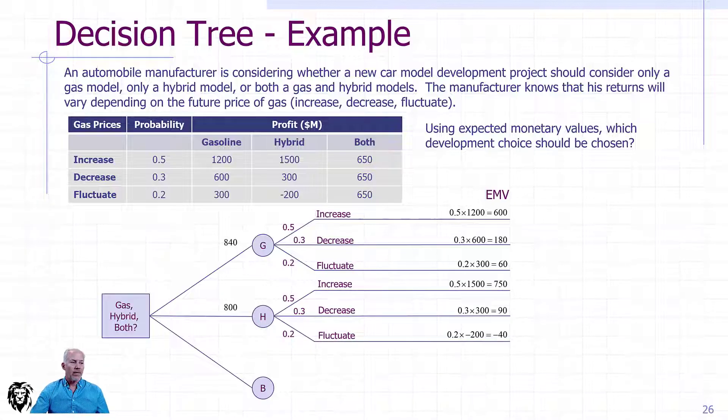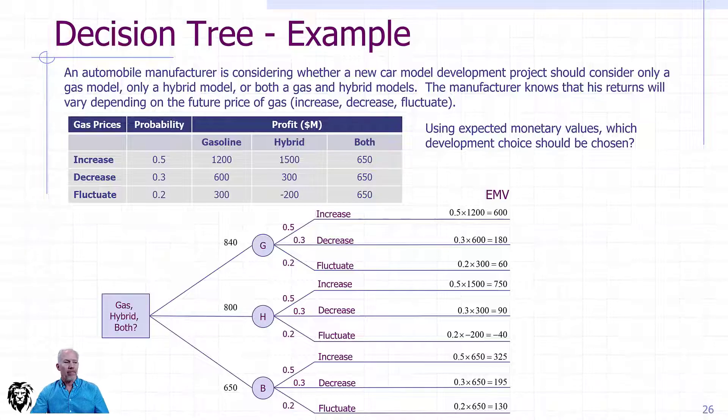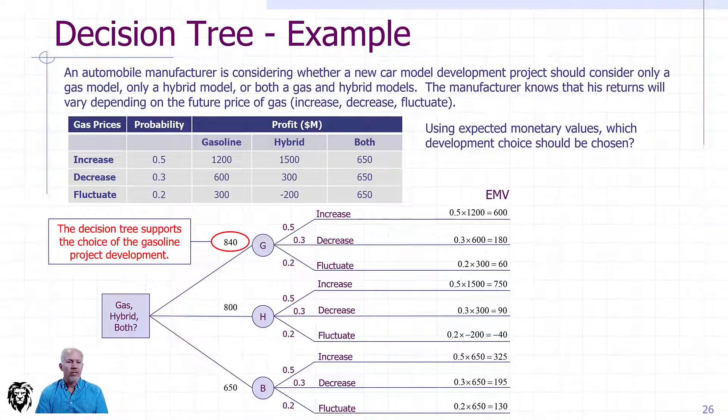When we look at the hybrid, we'll do the same calculations. It comes up with an equivalent value of 800 million. Finally, if we hedge our bets and go for both, we get an equivalent value of 650 million for the both option. Because we're talking about profitability or benefits, the higher the equivalent value, the better it is for us. We would look at these numbers and choose the 840 million equivalent value and decide that the gasoline option development was the best.